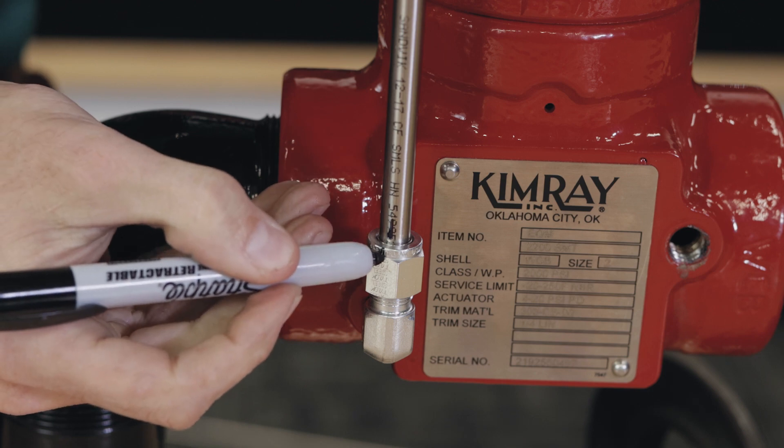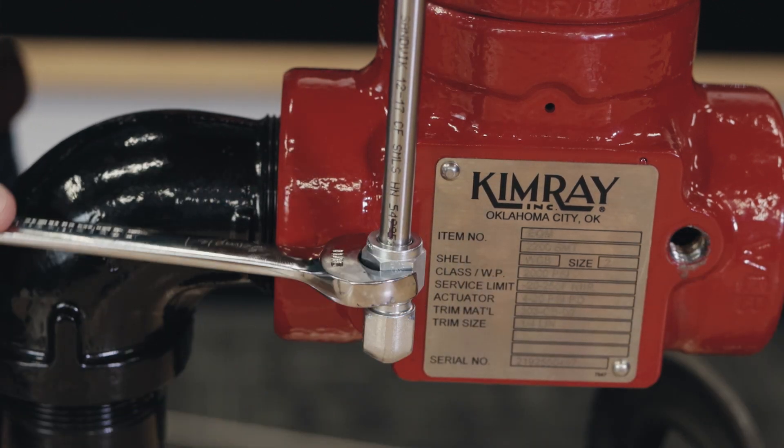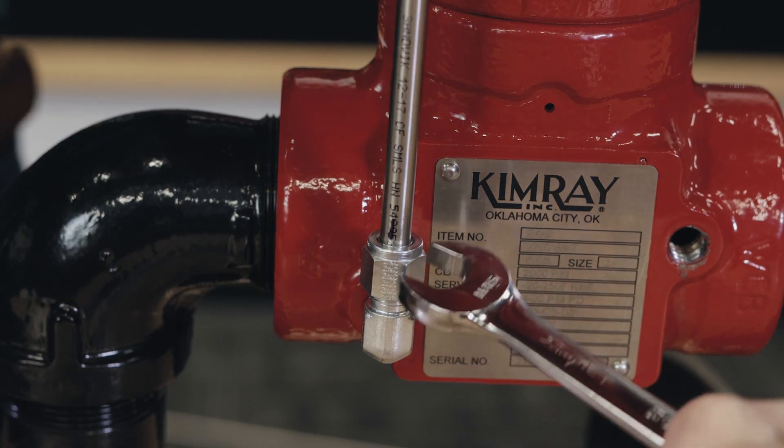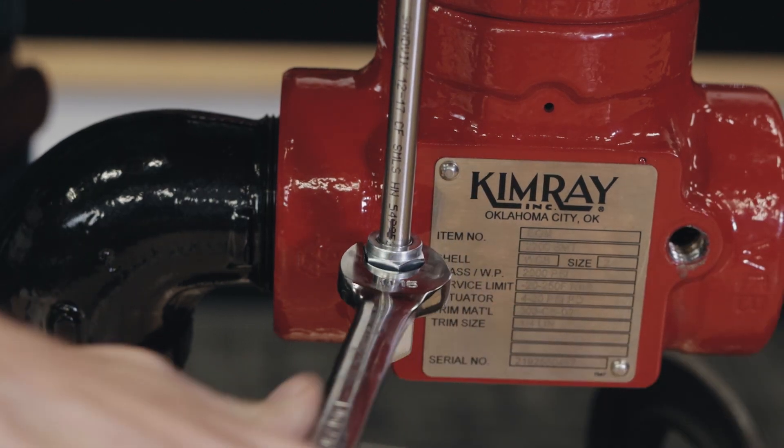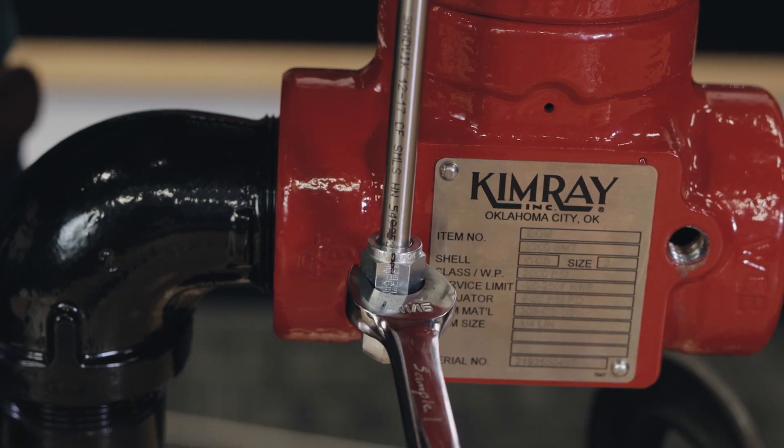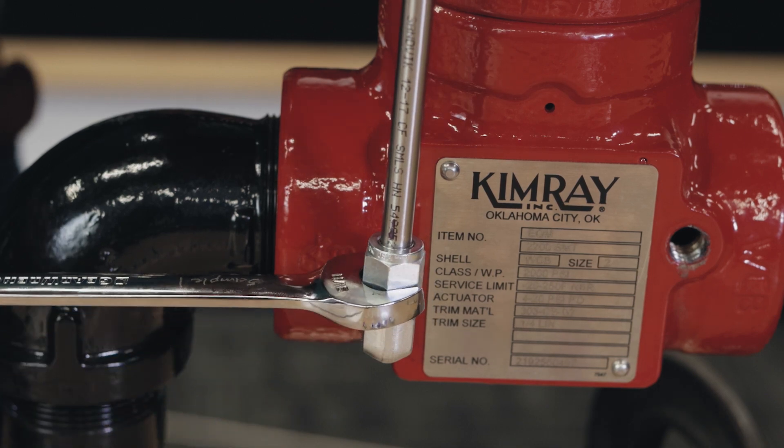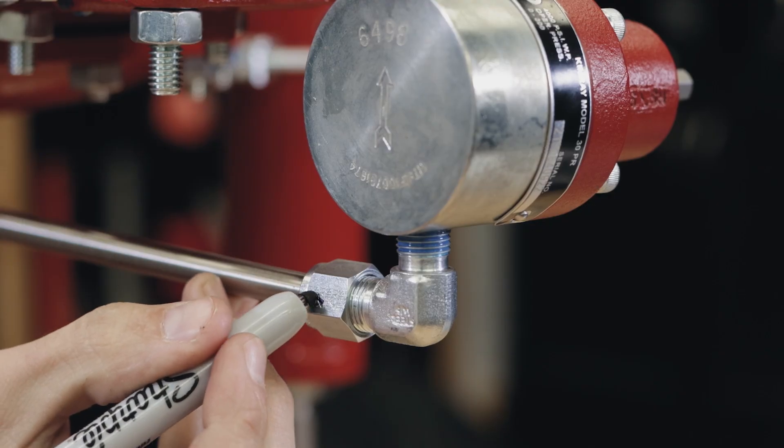To keep track of the amount of rotation, you can mark the tubing and nut in its starting position. Hand tighten the nut, then turn another 1 or 1 1/4 turns with a wrench. Over tightening can put too much pressure on the fitting. Do this for both fittings.